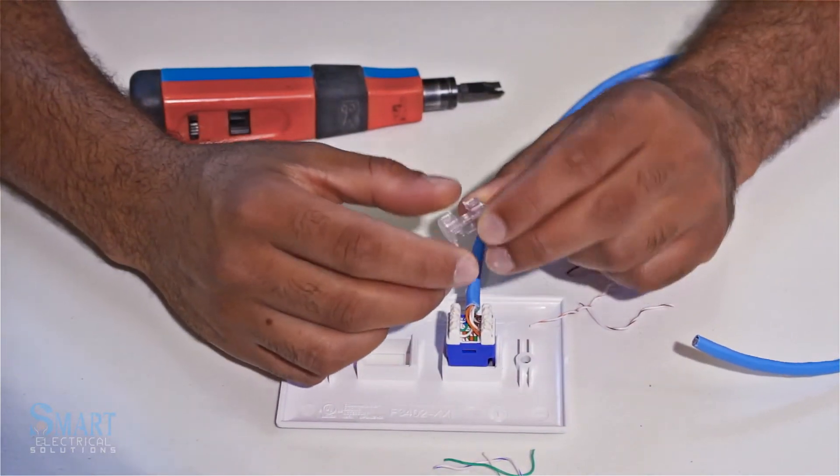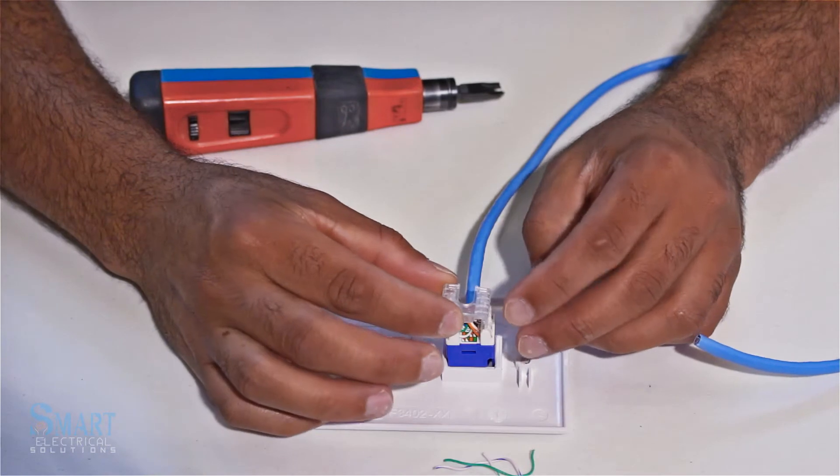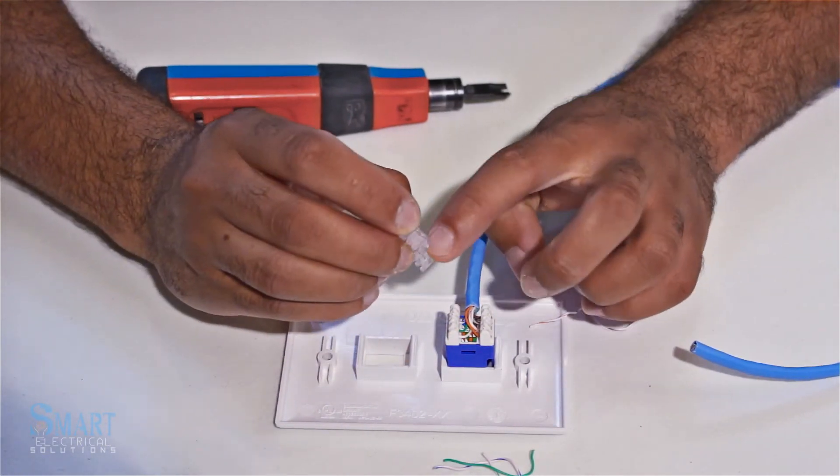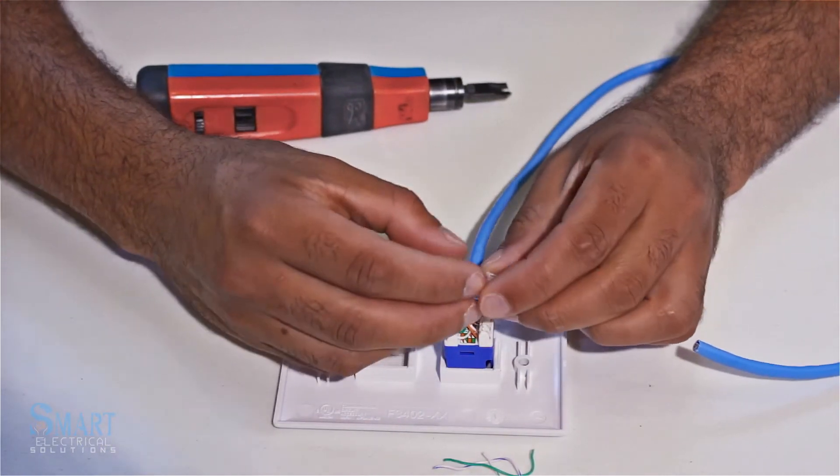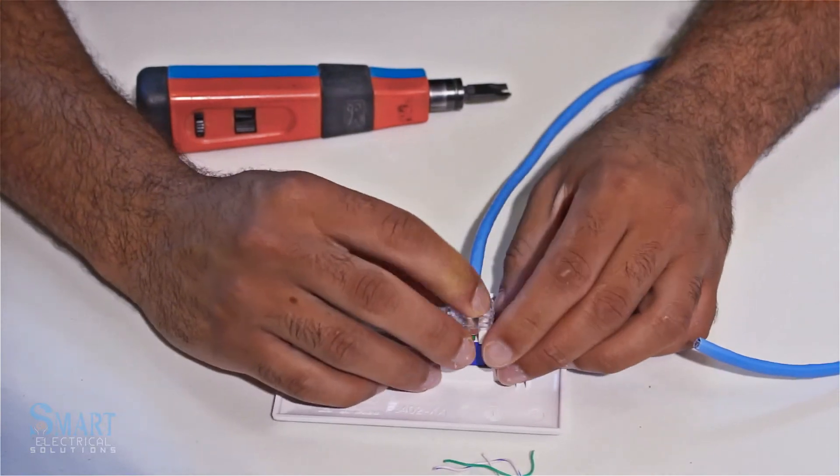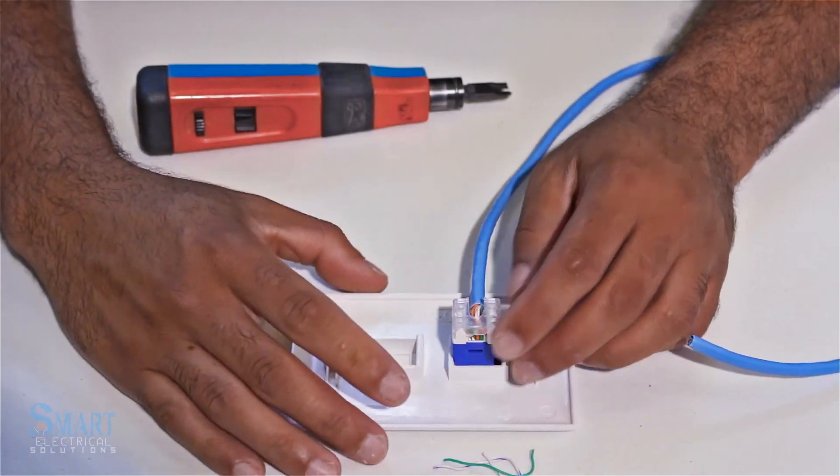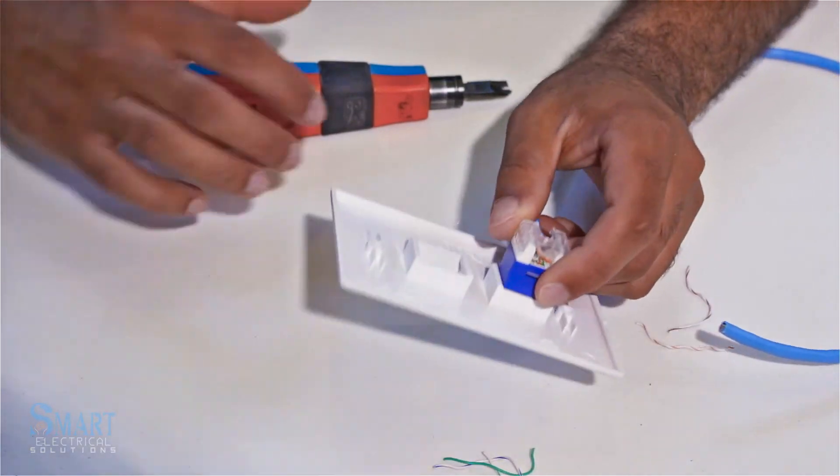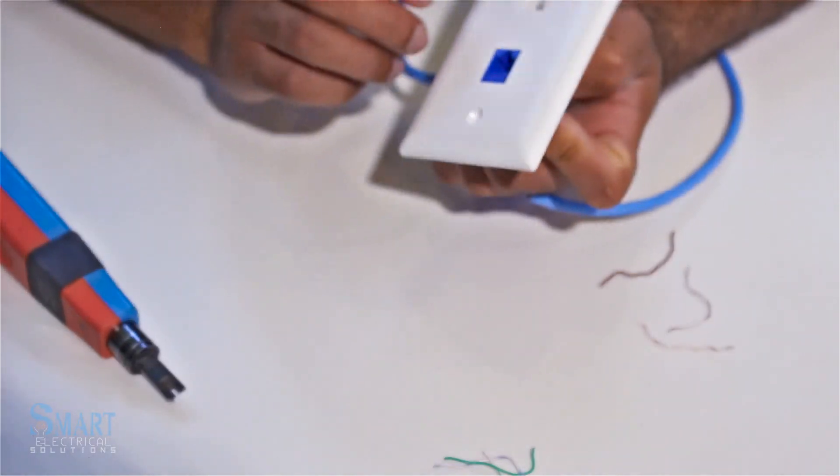Once you're done with that, the little cap goes on top. Usually the open side goes towards the cable and you just snap it in place. That's basically it.